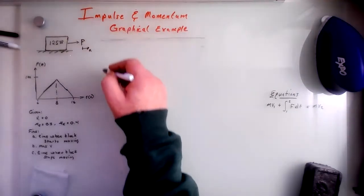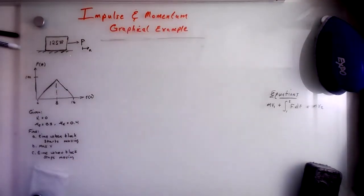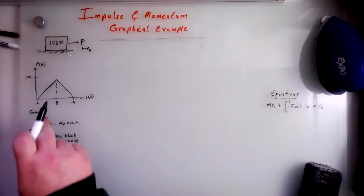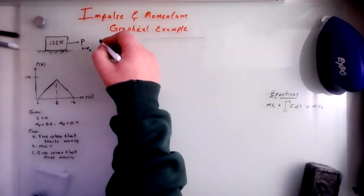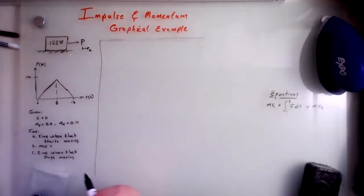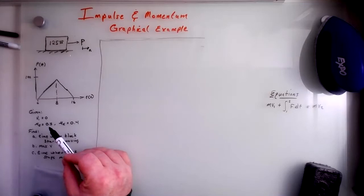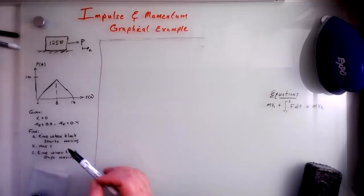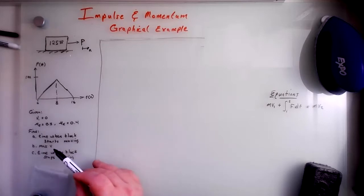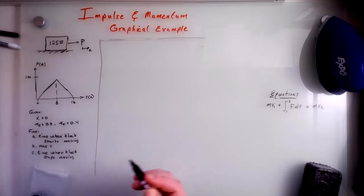So in this example, we're given that v, the initial velocity is zero. Our coefficient of static friction is 0.5. Kinetic friction, 0.4. We're asked to find when the block starts moving, what the max v is, and when the block stops moving. So let's get to it.